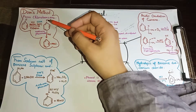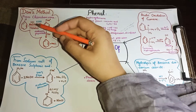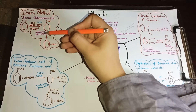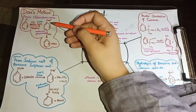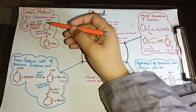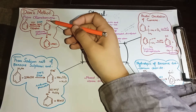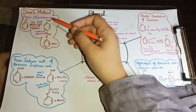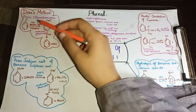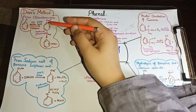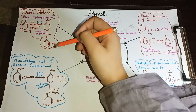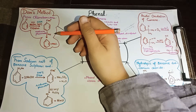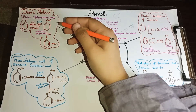First is the Dow's Method. In this method, chlorobenzene is reacted with 10% NaOH at 623 Kelvin, which is 360 degrees Celsius, under high pressure of 150-180 atm. The reaction proceeds under these conditions.